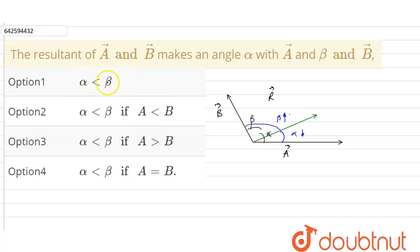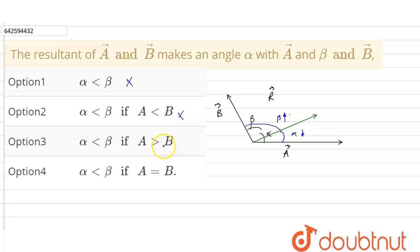From the given options, we cannot directly state the relation between alpha and beta just by knowing there are two vectors, so option one is not correct. Option two states that when the magnitude of B is greater than A, beta is greater than alpha — this is definitely wrong, as when magnitude increases the angle between the resultant and that vector decreases. Option three states that when magnitude of A is greater than B, the angle between the resultant and B is greater than the angle between the resultant and A — this is correct.